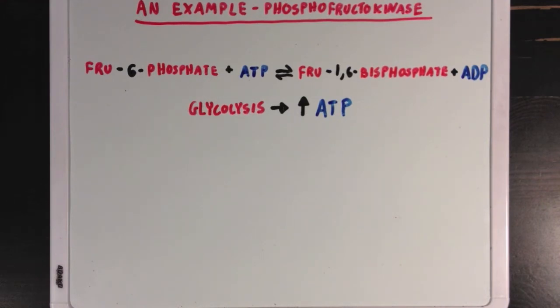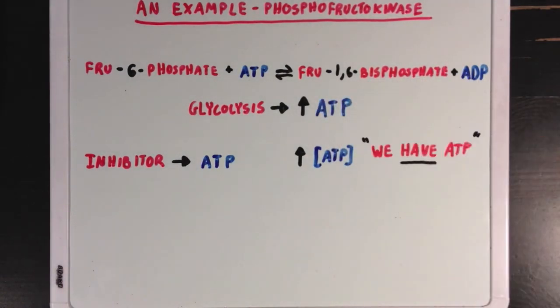It turns out that ATP is an allosteric inhibitor of phosphofructokinase. This makes sense, because if ATP is at a high level, then it's like the cell saying, we have ATP, and we don't really need any more. And we don't need phosphofructokinase to push glycolysis along.